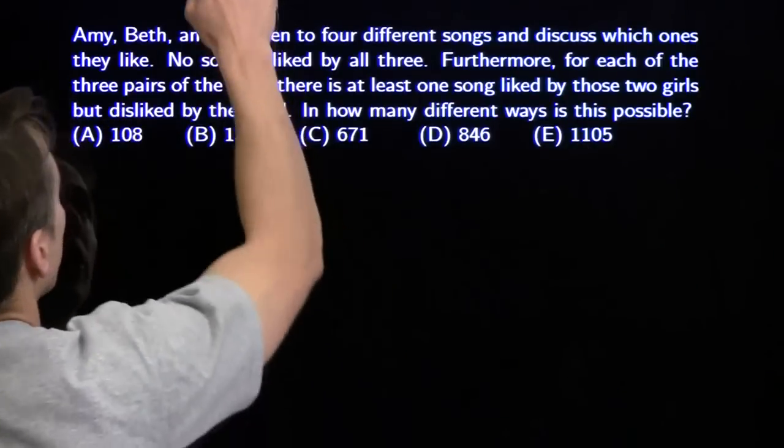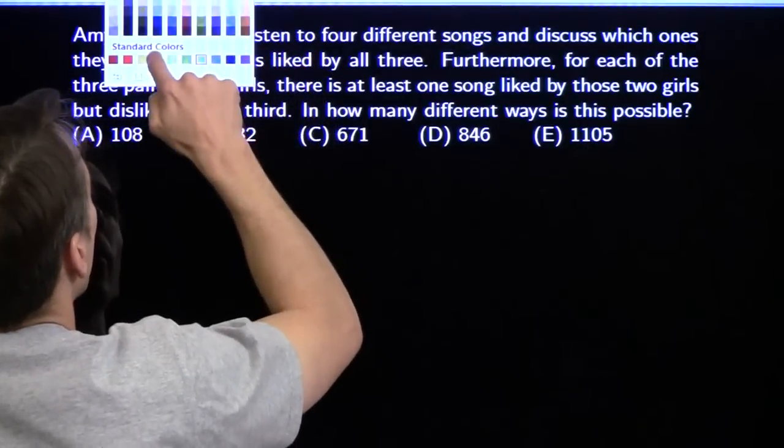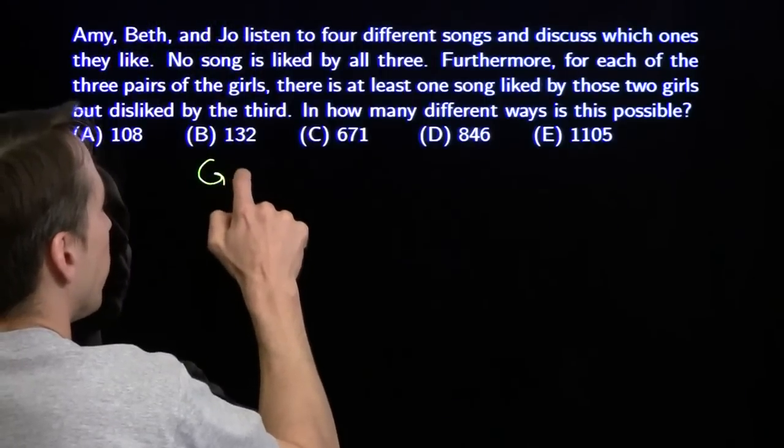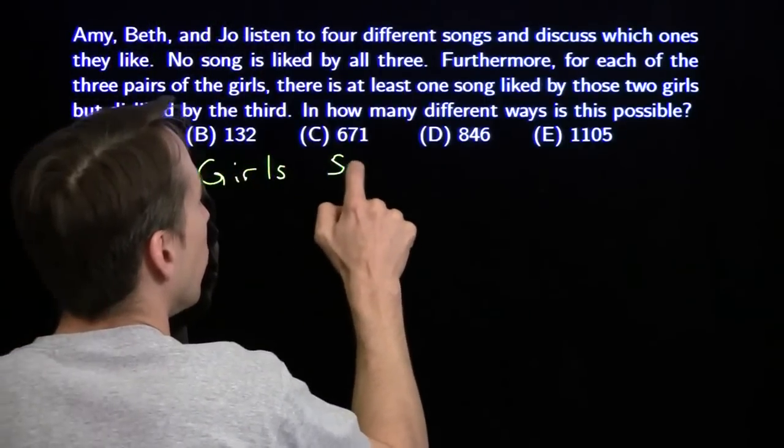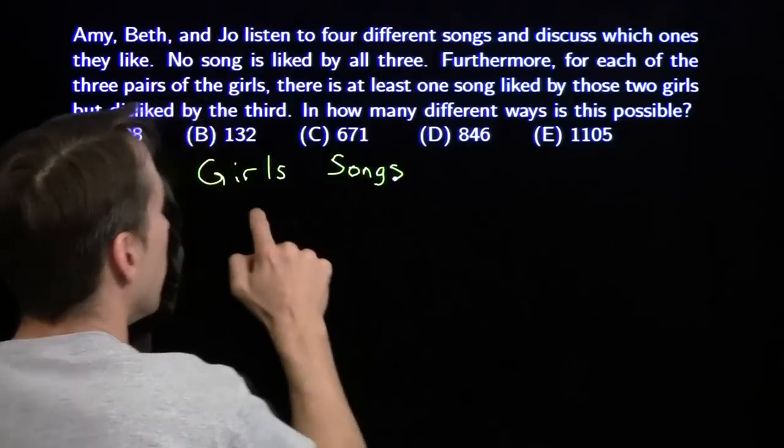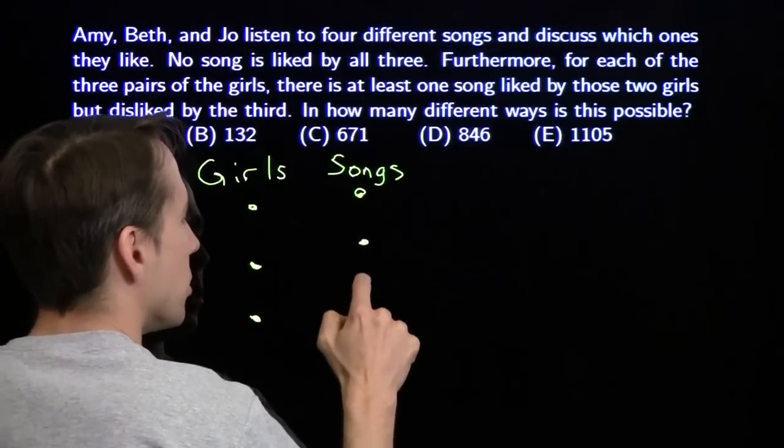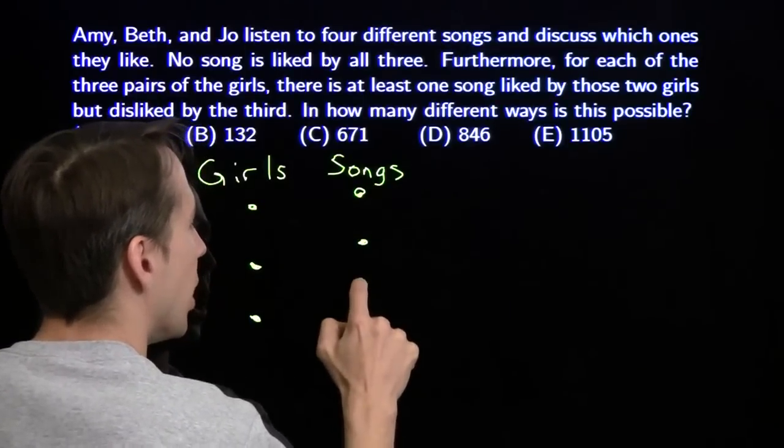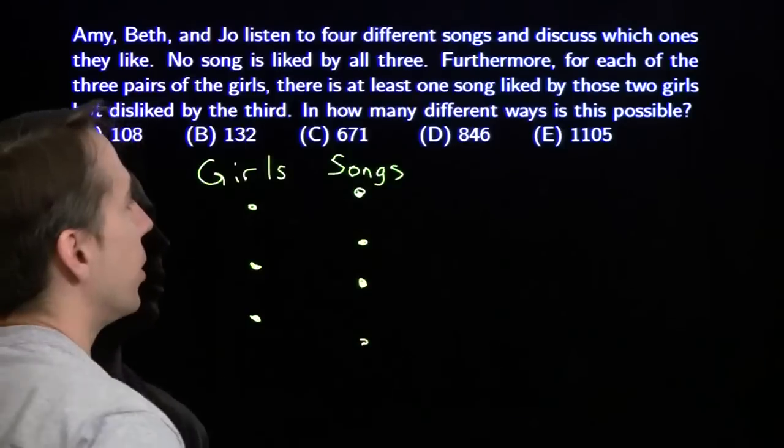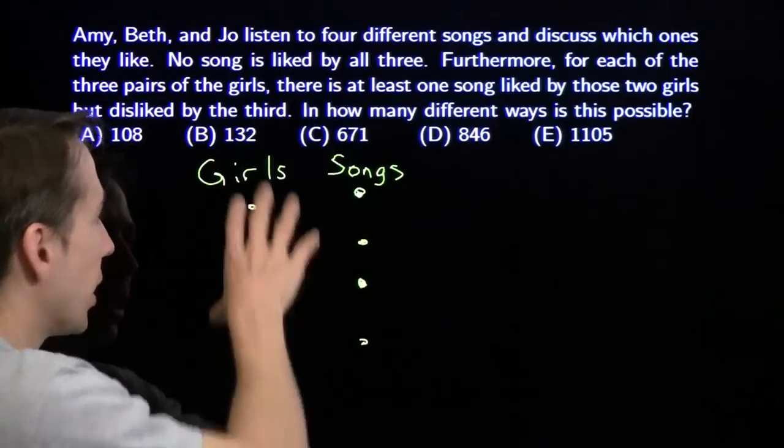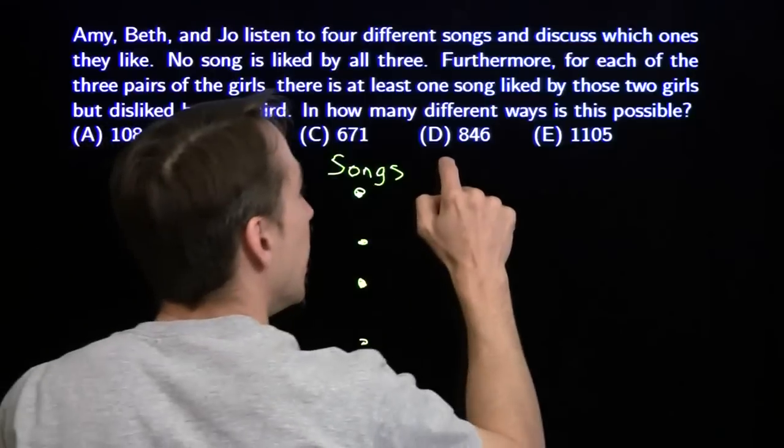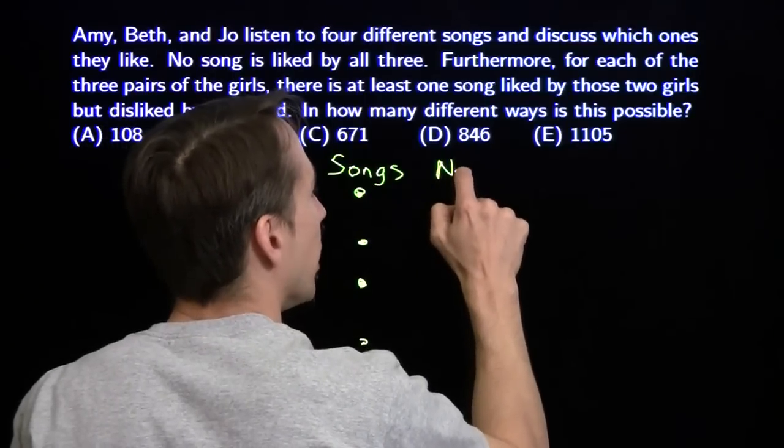Now, let's take a look at our other case. Once again, we draw a picture. Girls, songs. Three girls, four songs. We call these pictures graphs. A big, rich area of math called graph theory. It has to do with drawing graphs, points, connections. Here we have no pair likes two songs.